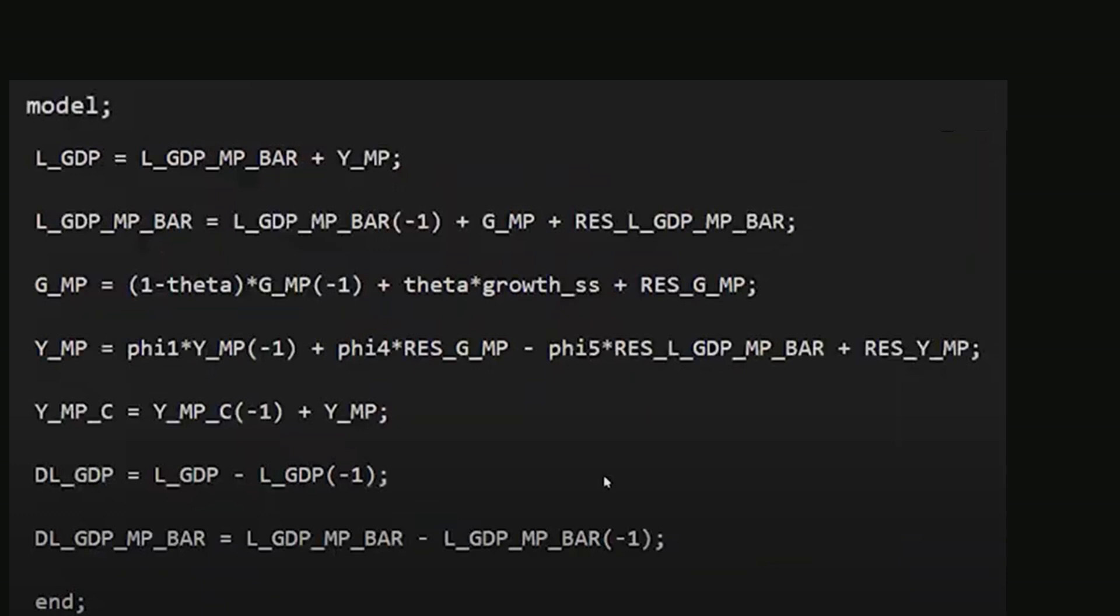The output gap equation defines it as a function of its lag and shocks to GDP level, GDP growth, and the output gap itself. The cumulative output gap Y_MP_C is defined as its lag plus the current period's output gap. This variable is primarily used for plotting and demonstration. The growth of GDP is expressed as the difference between current and lagged GDP. Trend GDP growth is similarly defined but refers to the trend level rather than potential output. Equations are terminated with semicolons.